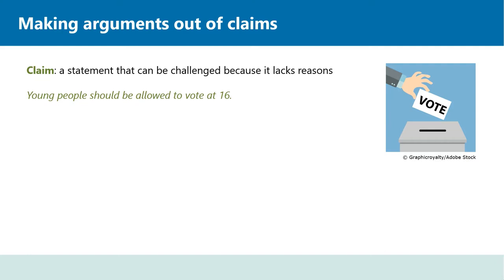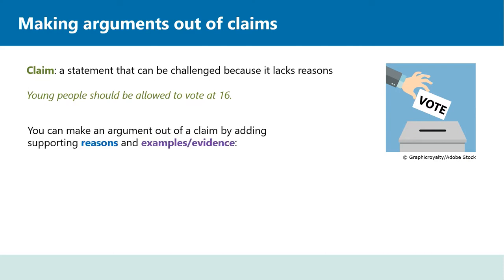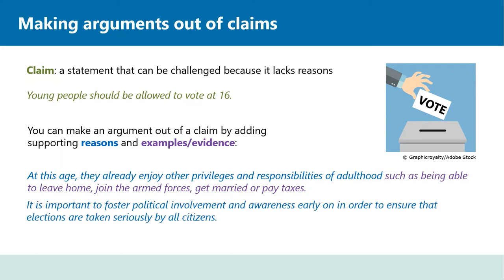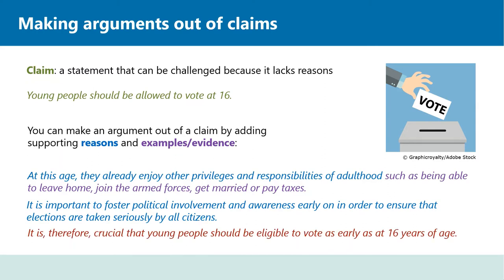In order to make an argument out of a claim, you need to add supporting reasons and evidence — this is a key skill in critical thinking. For example, you could add: 'At this age, they already enjoy other privileges and responsibilities of adulthood, such as being able to leave home, join the armed forces, get married or pay taxes.' Here you provide both a reason and pertinent examples that strengthen your point. You can add further reasons, such as: 'It is important to foster political involvement and awareness early on in order to ensure that elections are taken seriously by all citizens.' You can then state your initial claim as a conclusion: 'It is therefore crucial that young people should be eligible to vote as early as 16 years of age.' What was a simple claim has now become an argument.